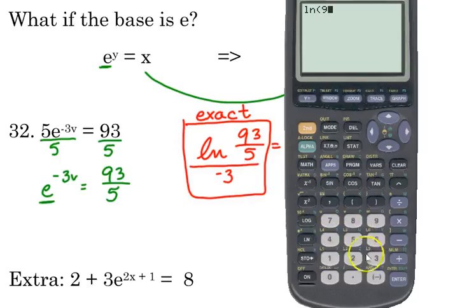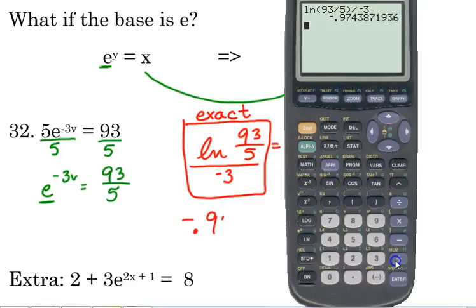It's beside the number 4. So natural log of 93 over 5 divided by just the number negative 3.